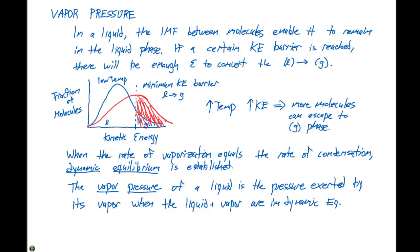The vapor pressure of a liquid is the pressure exerted by its vapor when the liquid and vapor are in dynamic equilibrium — that is, when the rate of vaporization equals the rate of condensation. As the intermolecular forces are stronger, the vapor pressure is going to be lower, because in the liquid phase everything is attracted to each other very strongly. But as we increase the temperature, our vapor pressure is going to increase.